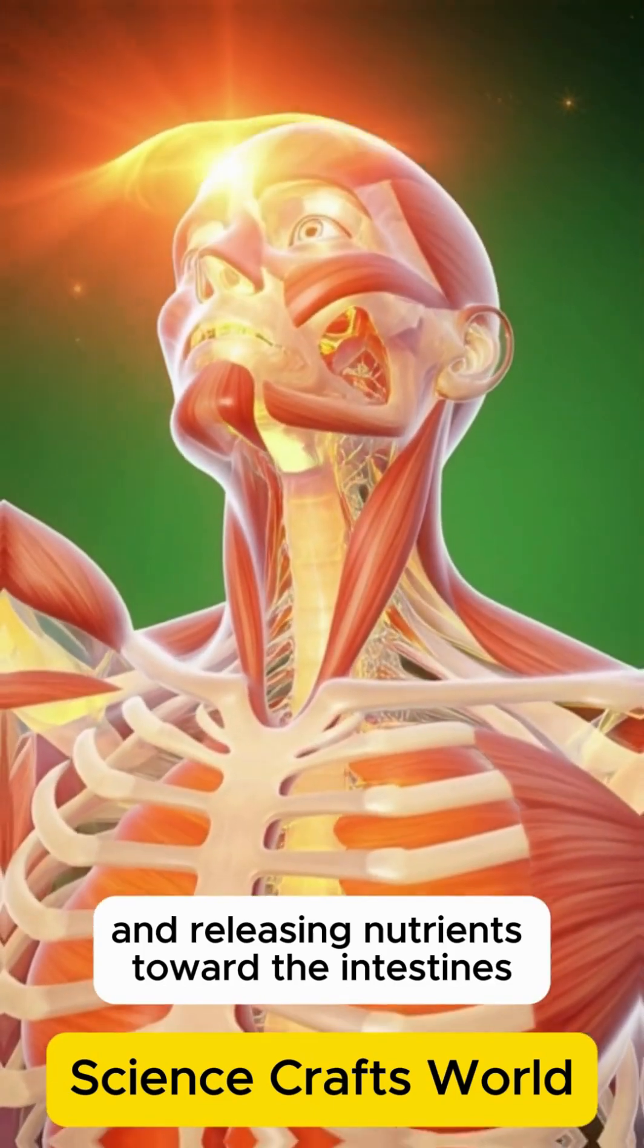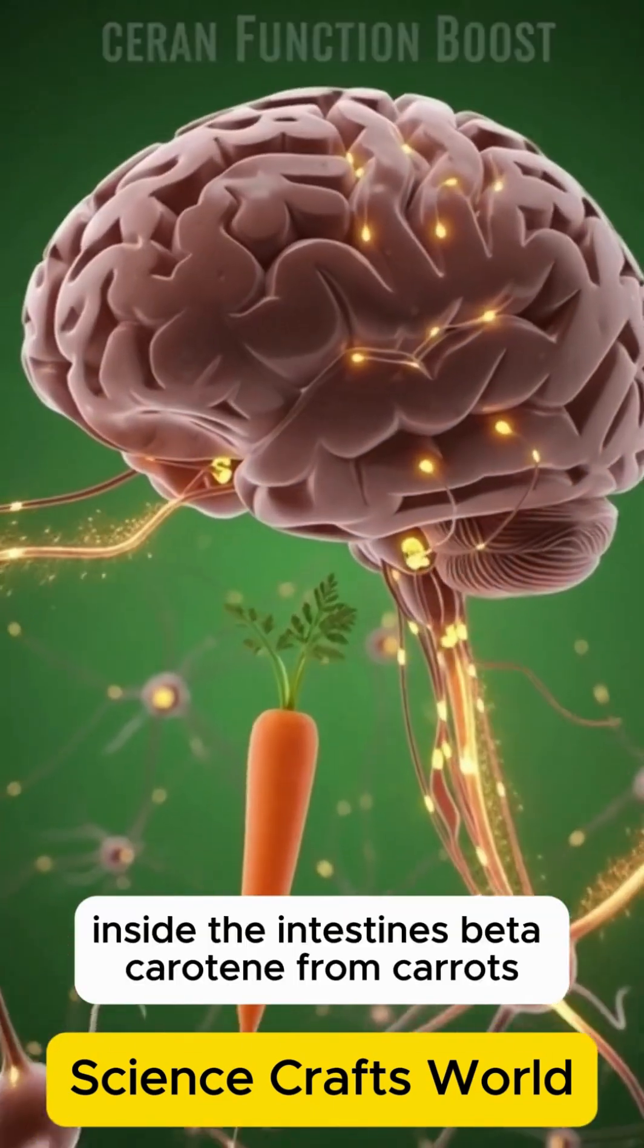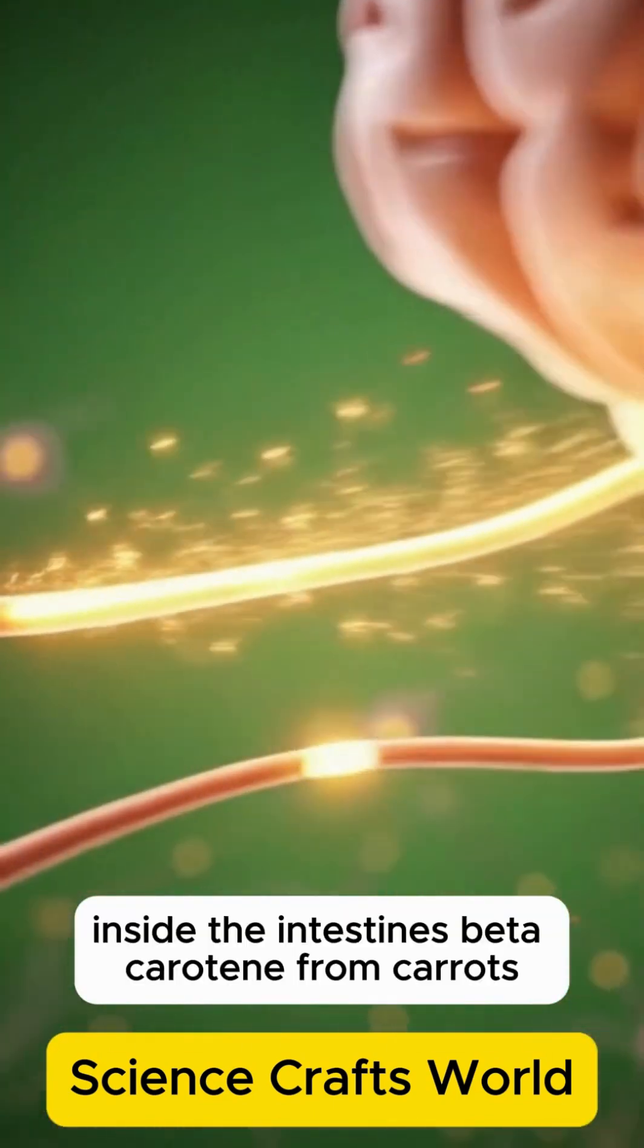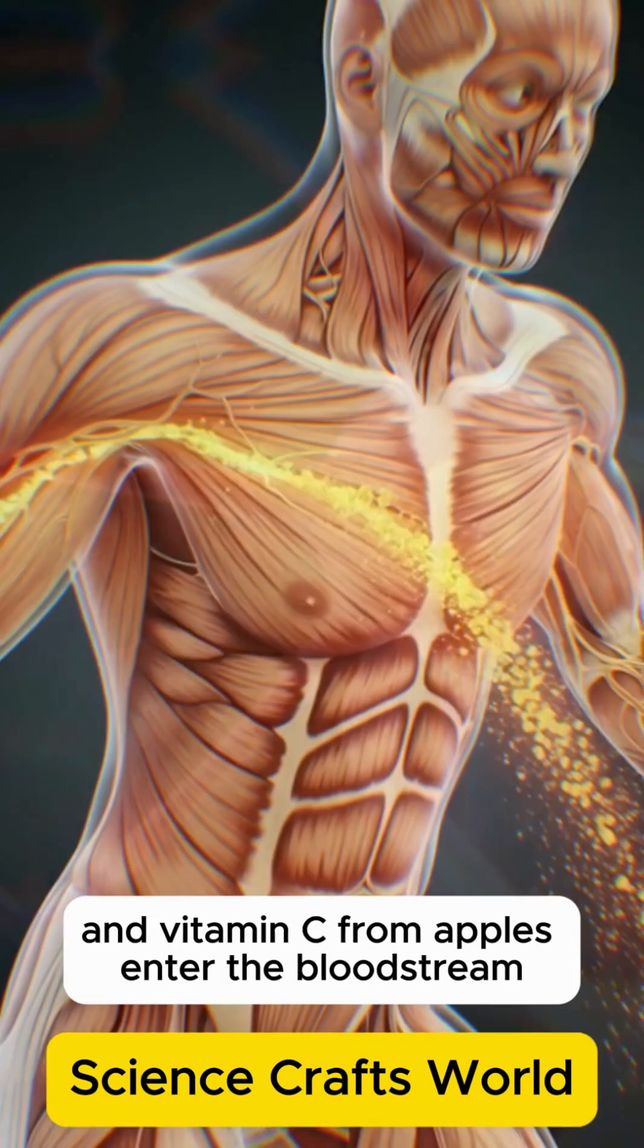Inside the intestines, beta-carotene from carrots and vitamin C from apples enter the bloodstream. This is where the real change begins.